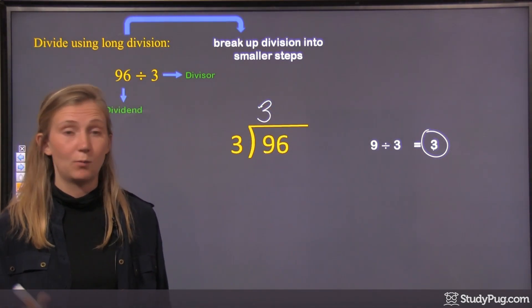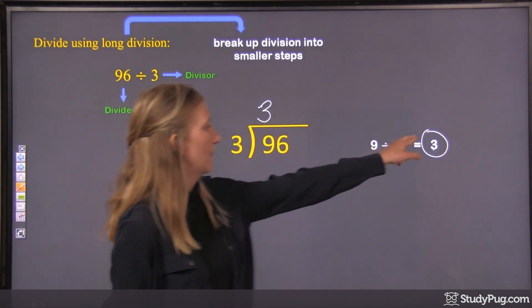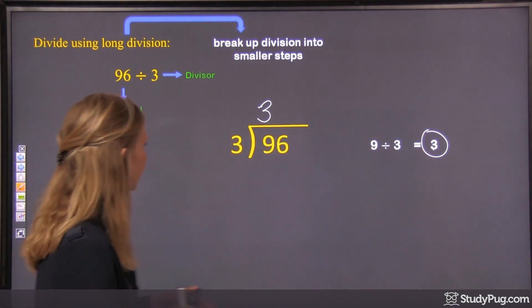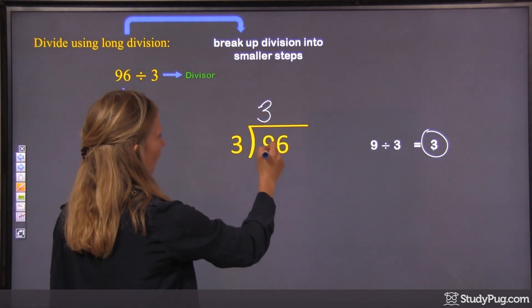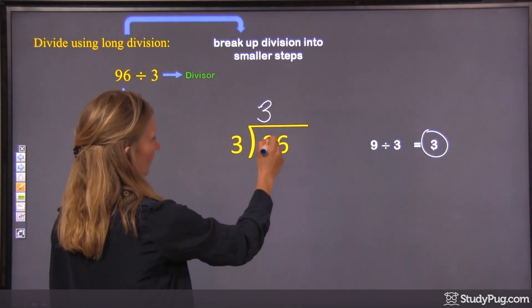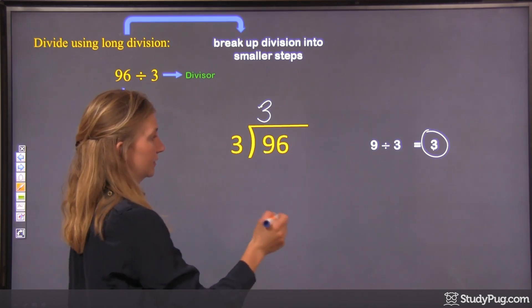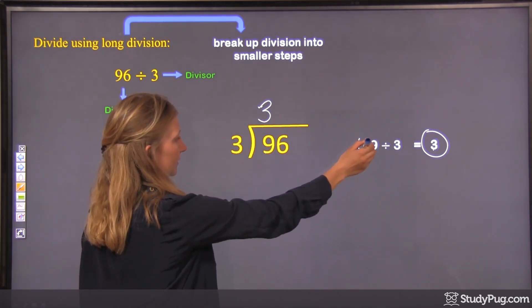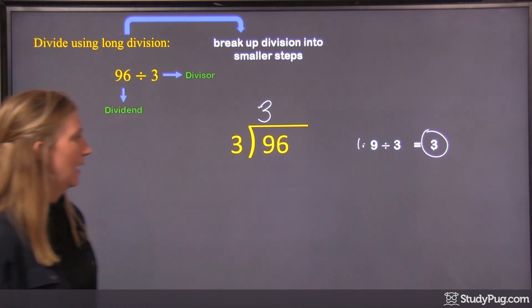This 3 goes right here on top of the 9. So that's a really important step. Make sure you put your quotient that you got from the first step right in line with the 9 here, which is the dividend of your first step. So this is step 1.